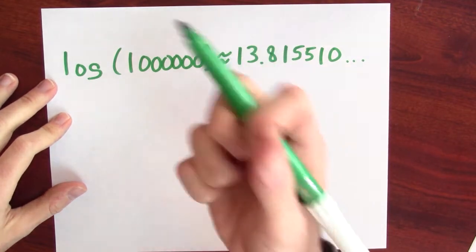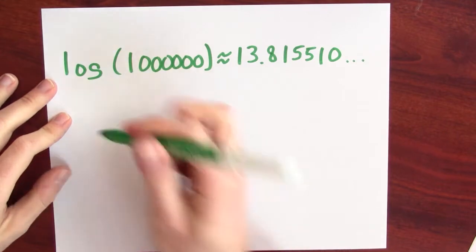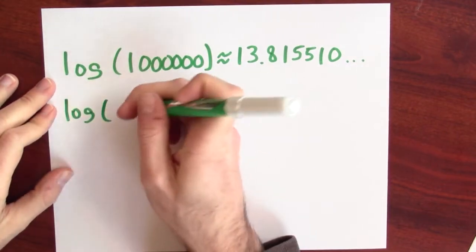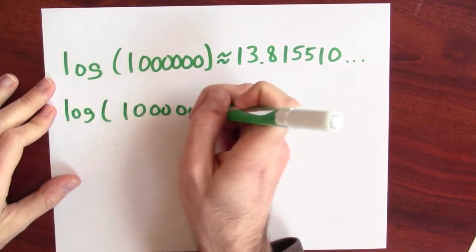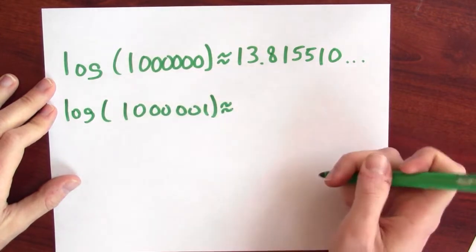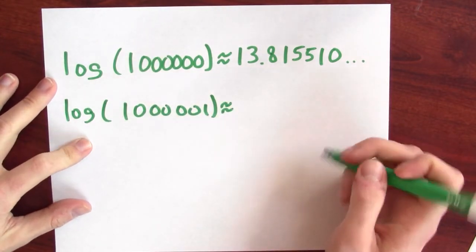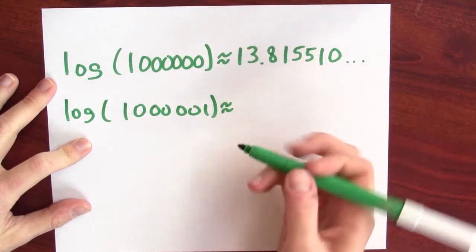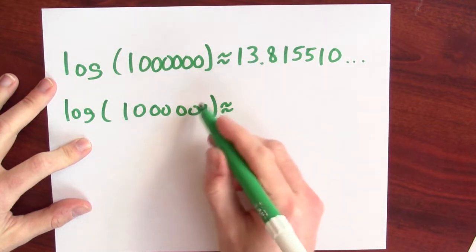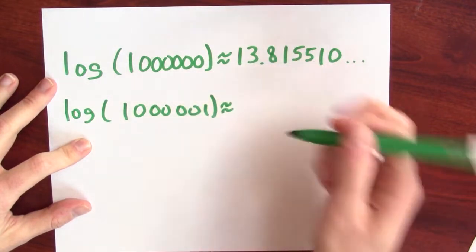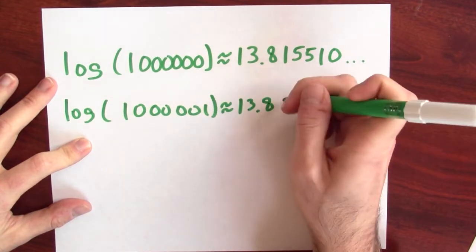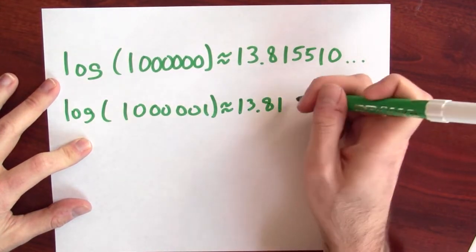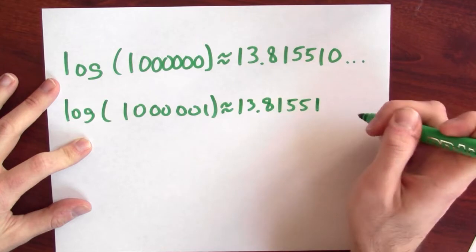But now, the derivative of log is 1 over its input. So what does that tell you that you might think log of a million and 1 is equal to? Well, the derivative tells you how much wiggling the input affects the output. So if I wiggle the input by 1, you expect the output to change by about the derivative. And yeah, log of a million and 1 is about 13.815511.